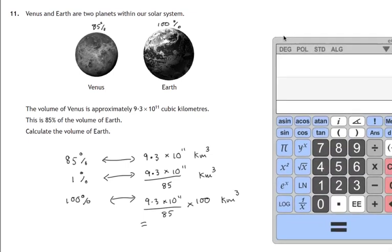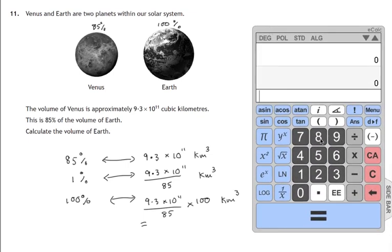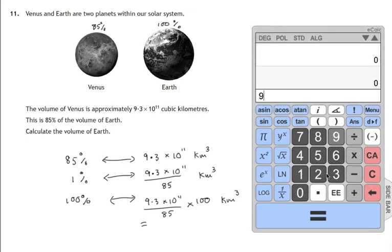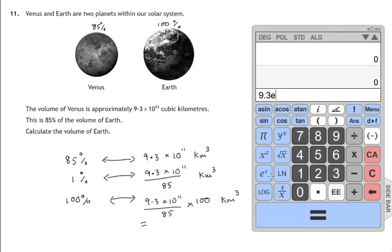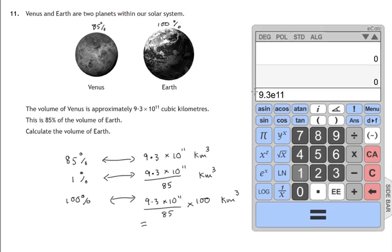So whatever that number is we have to multiply it by 100 and that'll give us the volume of the earth. So let's get going with the calculator on this one. So 9.3. Now standard form, scientific notation, usually there's a special key for that and in this calculator it's the EE. You'll know how your calculator does that.